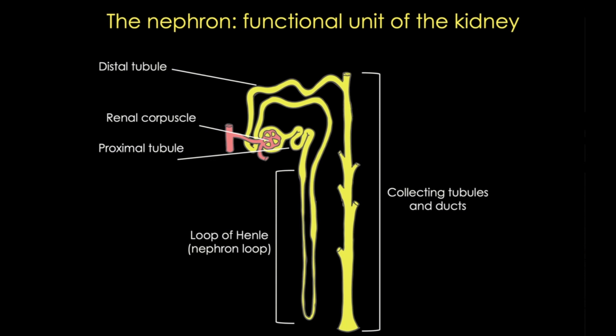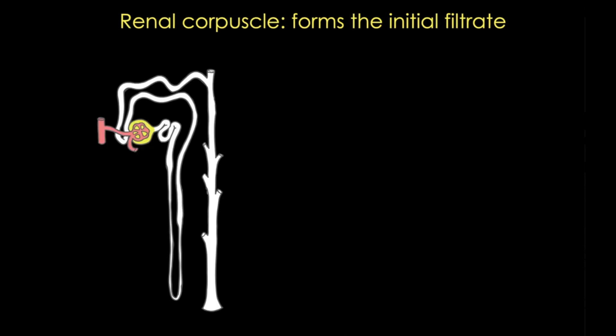Along this route the filtrate will receive secreted molecules, and other substances will be reabsorbed back into the body, so what ends up entering those minor calyces will now be termed urine and will be excreted from the body. Now we're going to go through each part in more detail using cartoons followed by microscopic views, starting with the renal corpuscle.